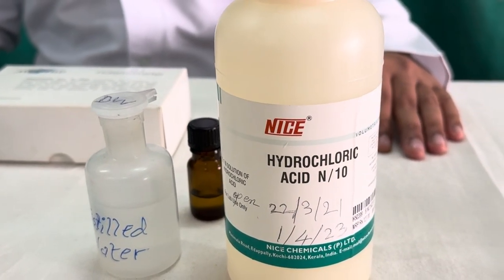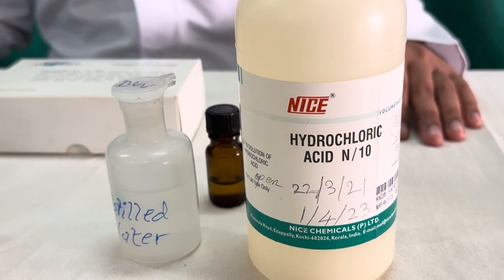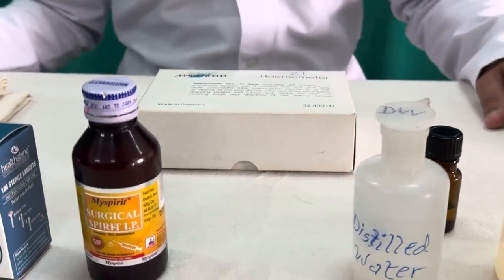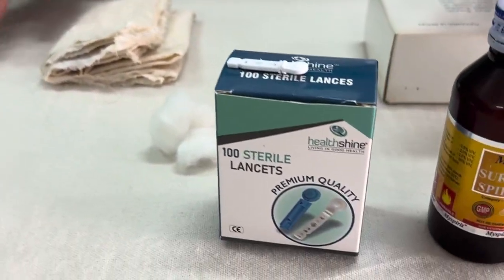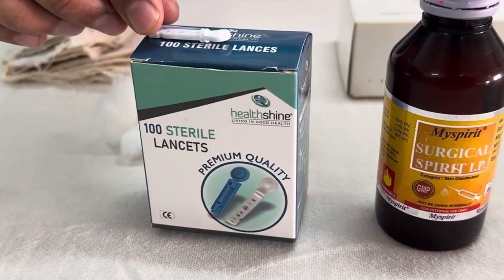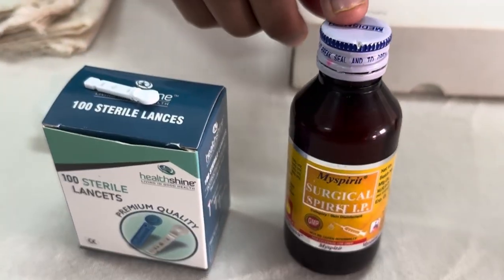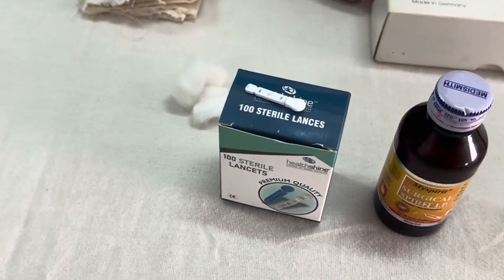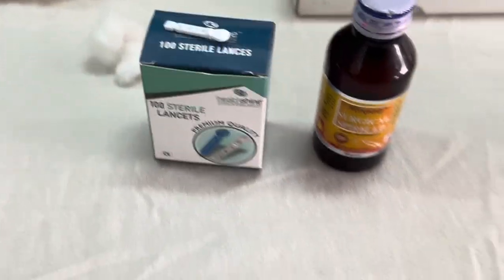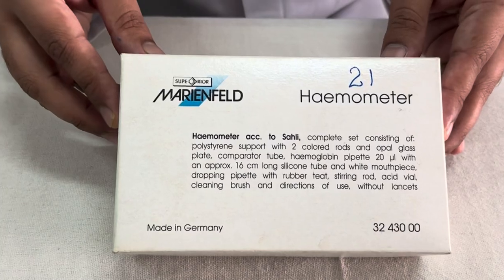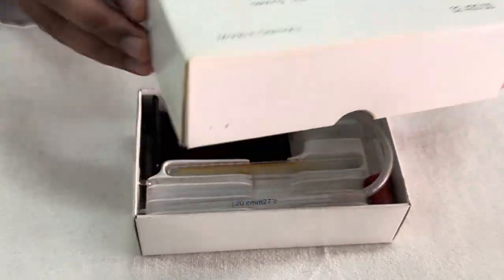First of all we require hydrochloric acid, that is N by 10 hydrochloric acid, distilled water, then instruments like lancets and surgical spirit or gauze or swabs for collection of the blood. Then the most important one is this Saheli's hemometer. Let us see what is there inside this box.